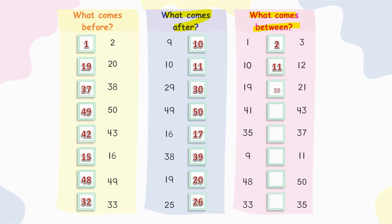Nineteen, twenty and twenty-one. Twenty is between. Forty-one, forty-three. Forty-two is between.